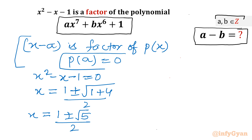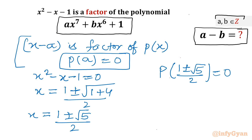Now, p(a) equals 0. I have to apply it, so I will write p of (1 plus or minus root 5 over 2) equal to 0. This is our p(x), and it is septic (degree 7) in nature. Once I apply this irrational value to our equation, this method of solving the problem is not going to be the easiest way. Let us find out the easiest way of solving.